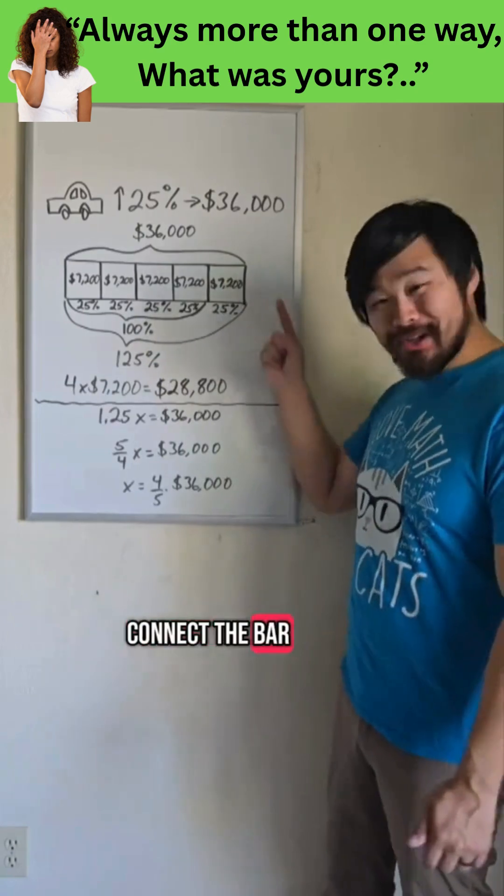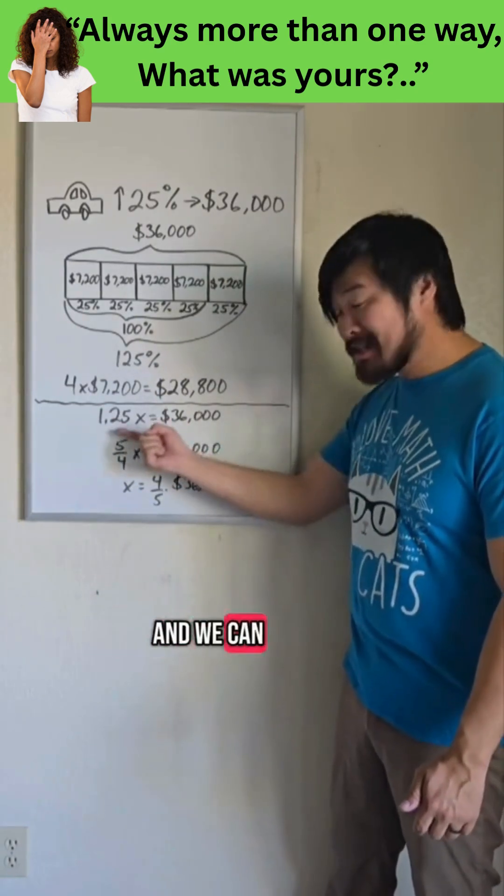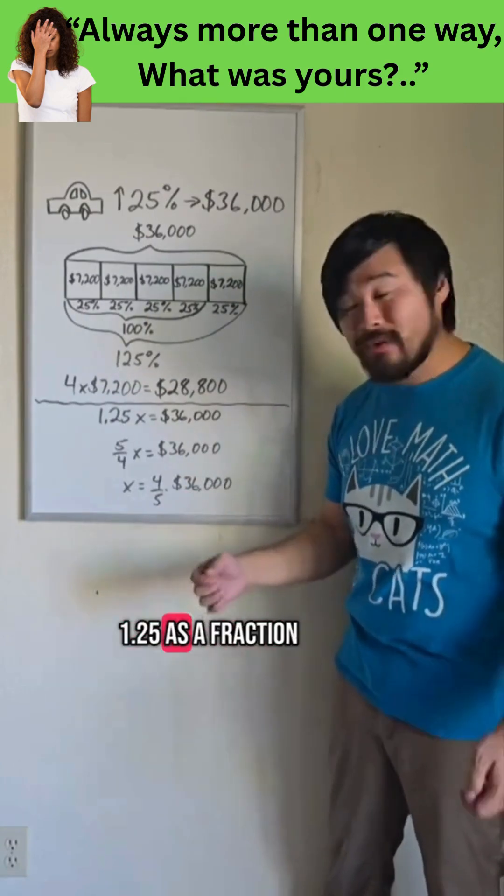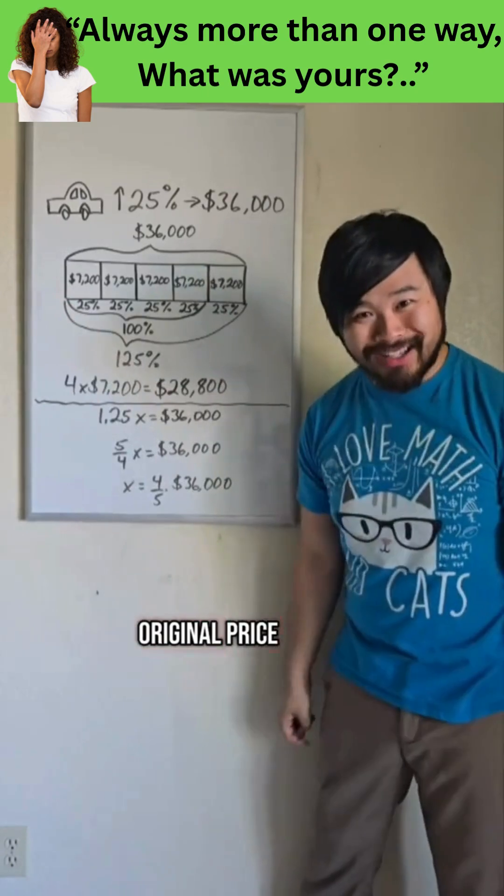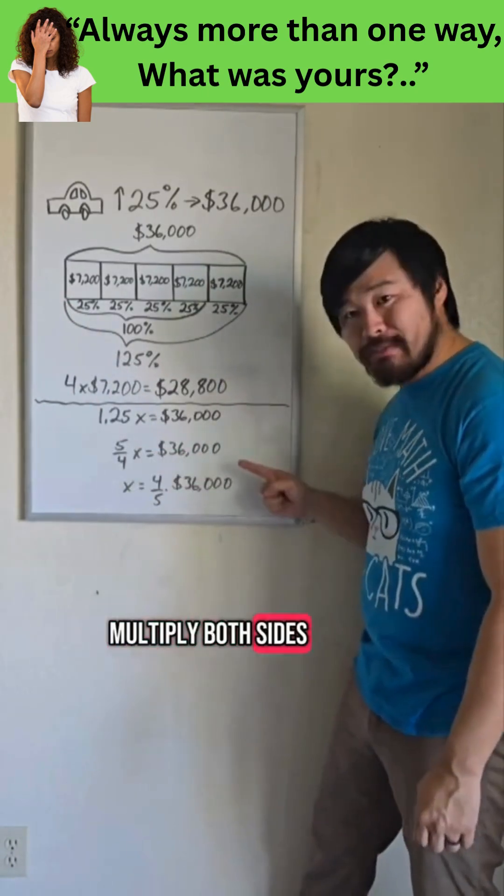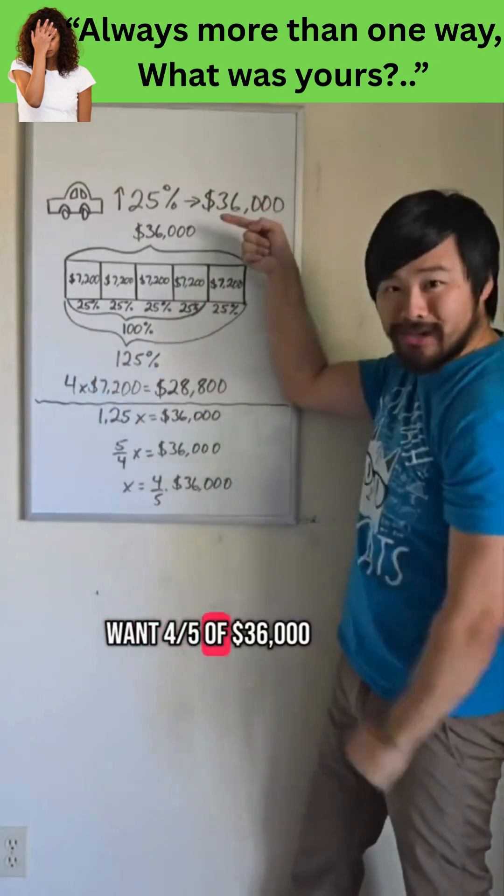Now we can connect the bar model to the abstract. Some may already be thinking about this. And we can see this a little more clearly if we write 1 and 25 hundredths as a fraction, 5 fourths. We have 5 fourths of the original price. And if we multiply both sides by 4 fifths, we can see why we would want 4 fifths of $36,000.